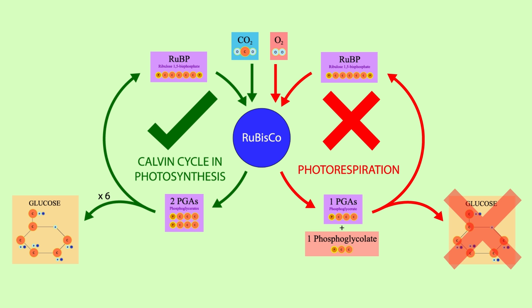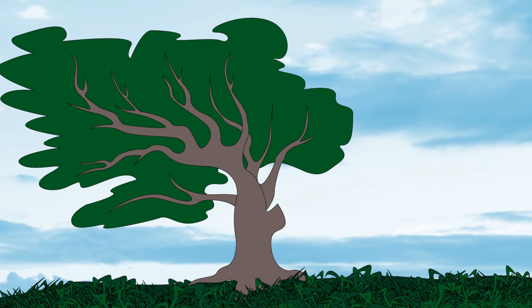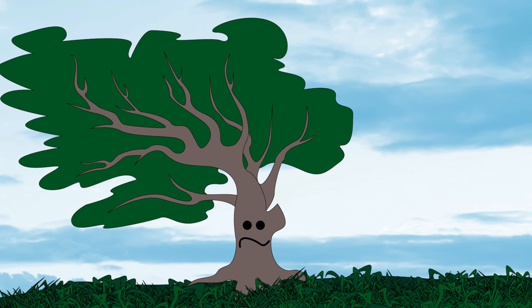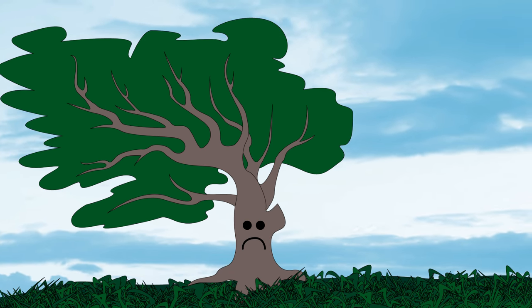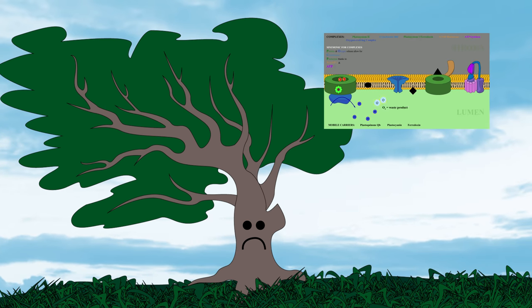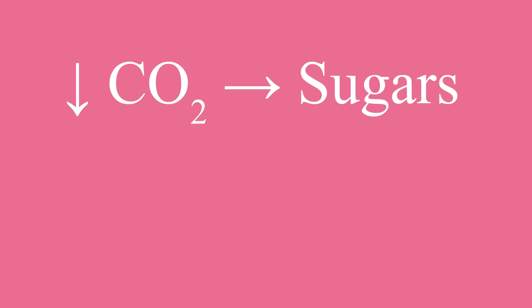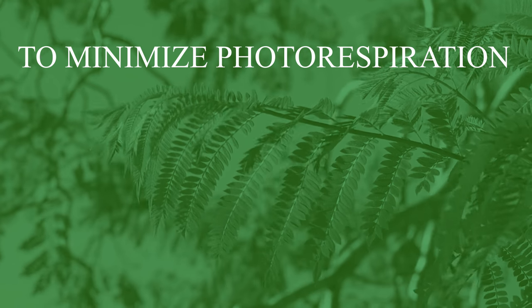This is why photorespiration is sometimes called the C2 cycle. Following the creation of phosphoglycolate, the plant attempts to reduce negative consequences and is forced to use up precious ATP and NADPH that was created during the light-dependent reactions. As a result, photorespiration decreases the net CO2 converted to sugars and decreases the plant's growth rate.